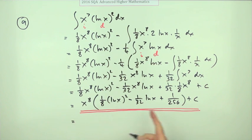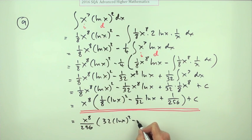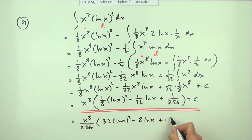Unless of course you did want to take out the worst of the fractions. If x^8 over 256 times, then that would go to 32 lots of ln x squared, that would go to 8 lots of ln x, and that would just be one + C. Oh, maybe that does look better after all.